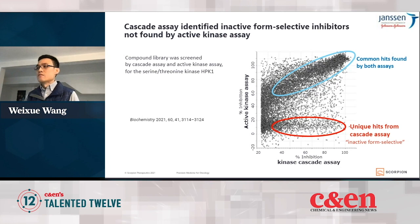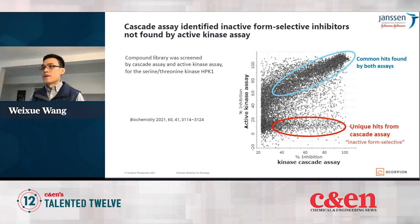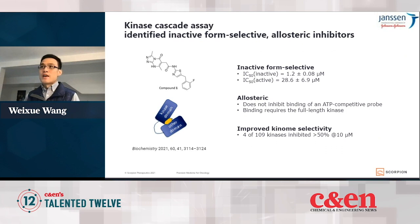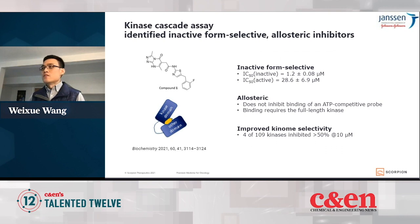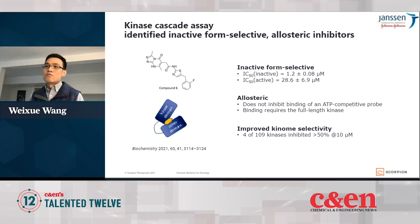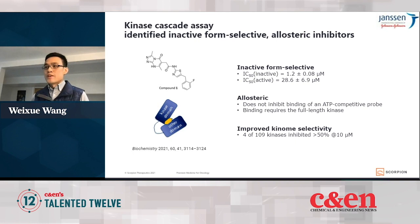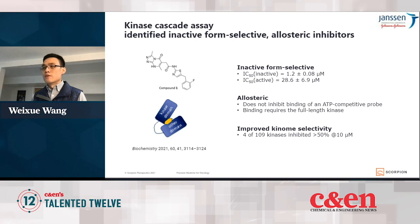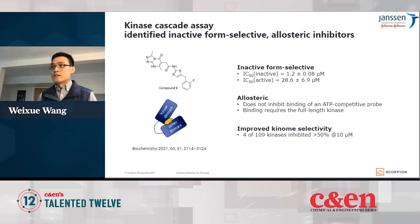We validated compounds from this second group of hits. Indeed there are inactive form-selective compounds. This compound binds to the inactive form 20 times tighter than to the active form. It's an allosteric inhibitor, meaning that it doesn't bind to the highly conserved ATP binding pocket — the binding pocket is actually outside of the kinase domain. Importantly, this primary hit from the screen has very promising selectivity, inhibiting only four out of over a hundred kinases. This is a great example showing that by targeting the inactive form of the kinase using cascade assay, you can find more selective kinase inhibitors.